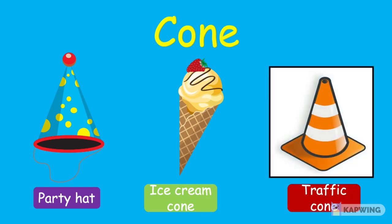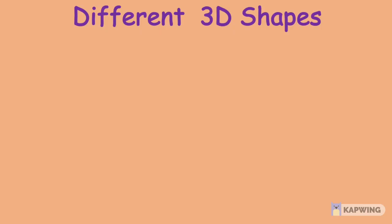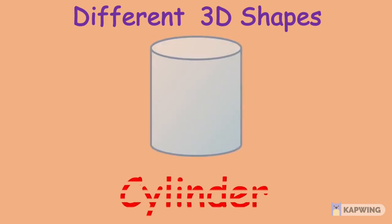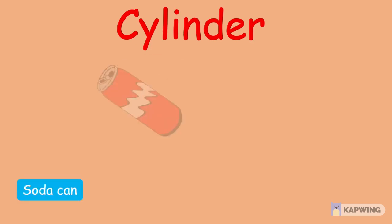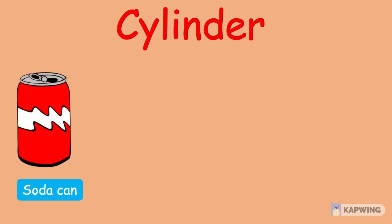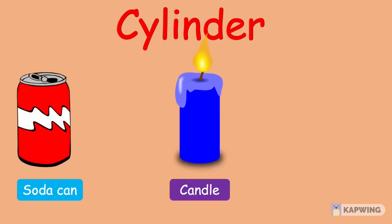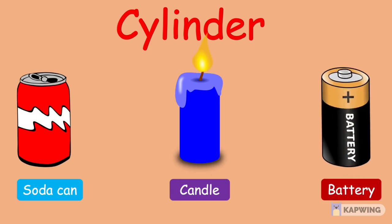And our next 3D shape is a cylinder. A cylinder has got a circle on the top, a circle on the bottom, and smooth all around. For example we have a can. Here you can see it has a circle on the top, a circle on the bottom, and smooth all around. In the same way, we can take candle and battery as examples for cylinder 3D shapes.